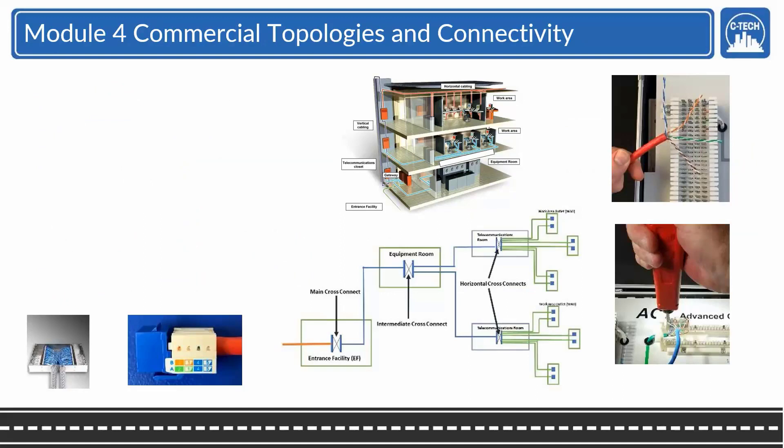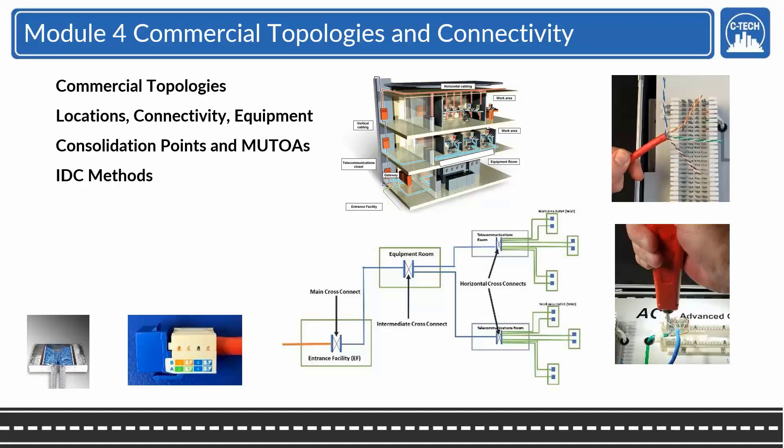And here's some of the activities in Module 3. Module 4 is commercial topologies and connectivity, and we're going to go all through the locations, the cabling infrastructure and how it's all put together. Consolidation points and MUTOAs - consolidation points are part of the horizontal where a MUTOA is not. It would be like a large work area or desk.